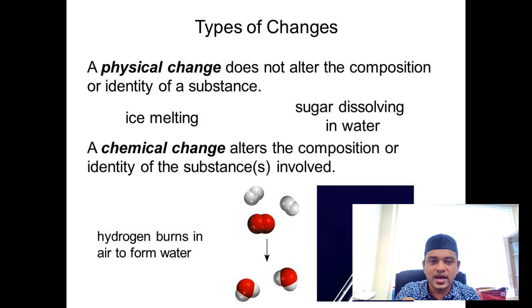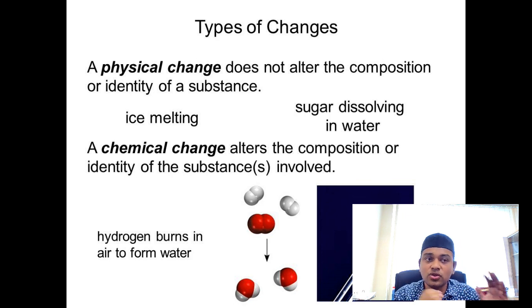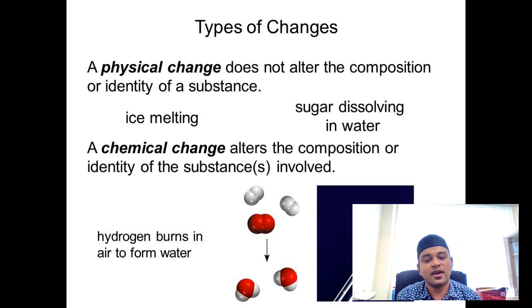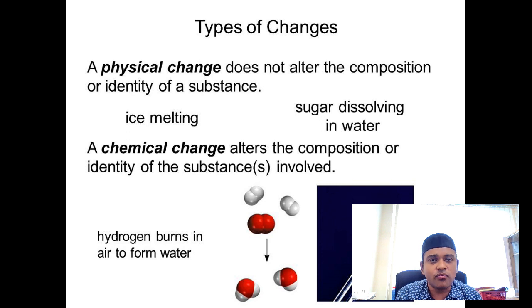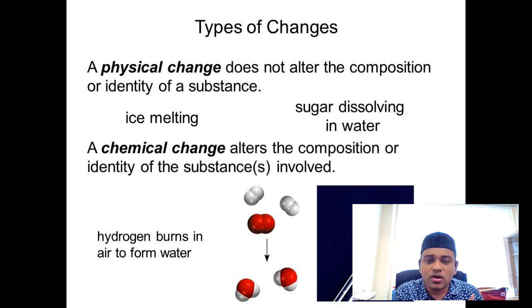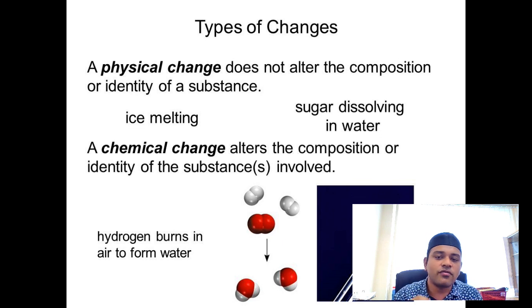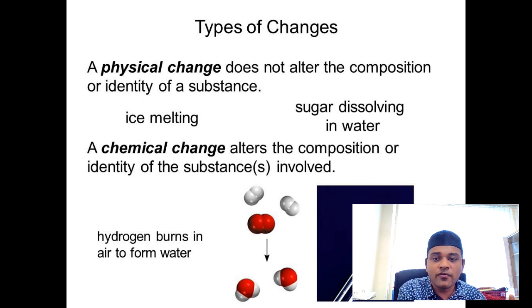When I say physical reaction, it means there is no new product formed. A simple example: I have ice, which is H₂O. When the ice melts, it forms liquid water — also H₂O. Before and after, it is still the same product. Another example: dissolve a spoon of sugar in water — you get a sugar solution. But if you evaporate the water, only the original sugar is left behind. There is no new substance formed, so it is a physical change.